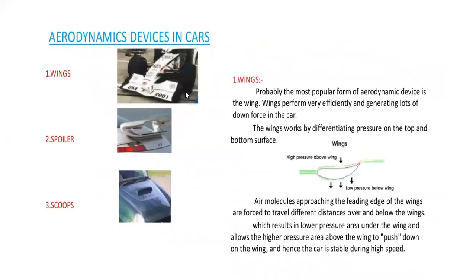Now we will see the aerodynamic devices in cars which are generally used to control aerodynamic forces. Number one is wings — shown here on a racing car — and the other is the spoiler, and the third is scoops. Wings are probably the most popular form of aerodynamic device.